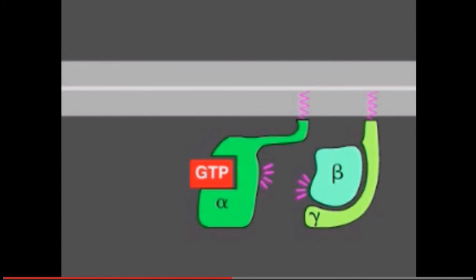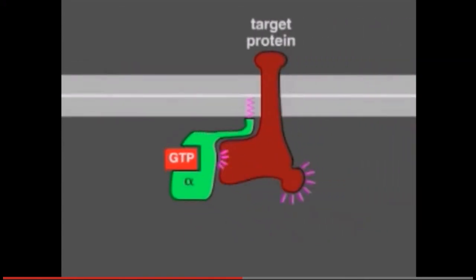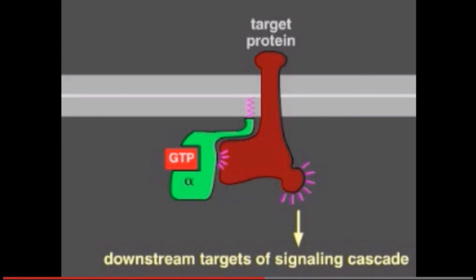In either case, both of the activated components can now regulate the activity of target proteins in the plasma membrane, as shown here for a GTP-bound alpha subunit. The activated target proteins then relay the signal to other components in the signaling cascade.